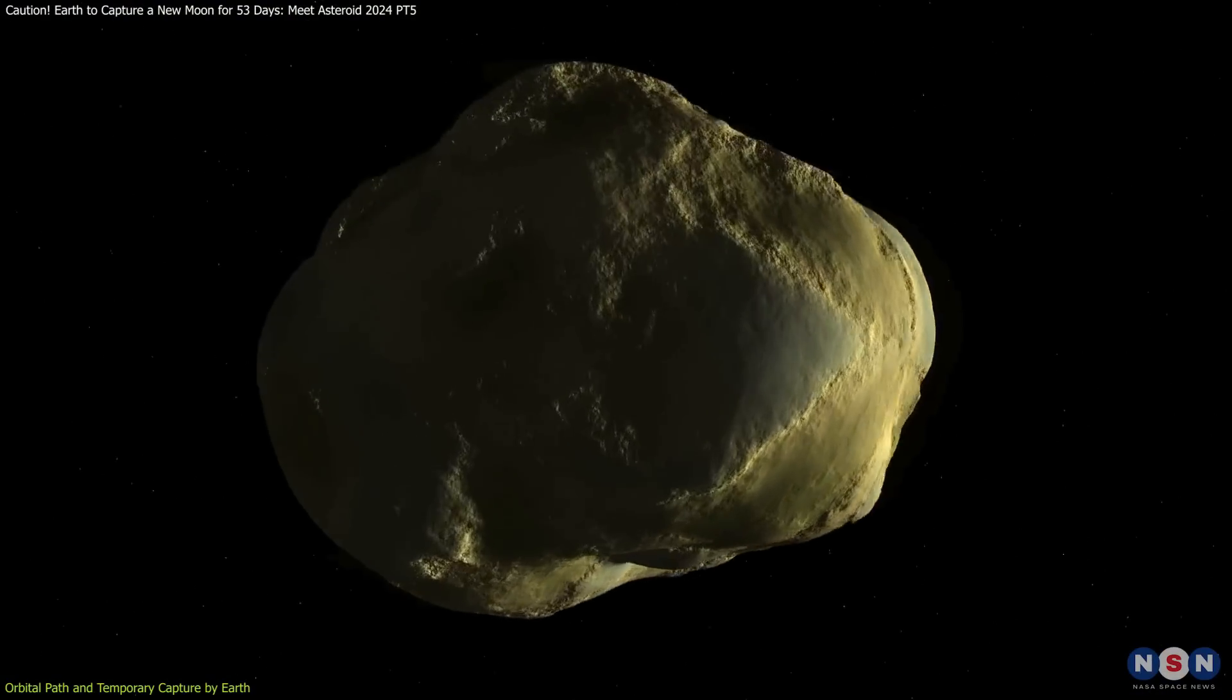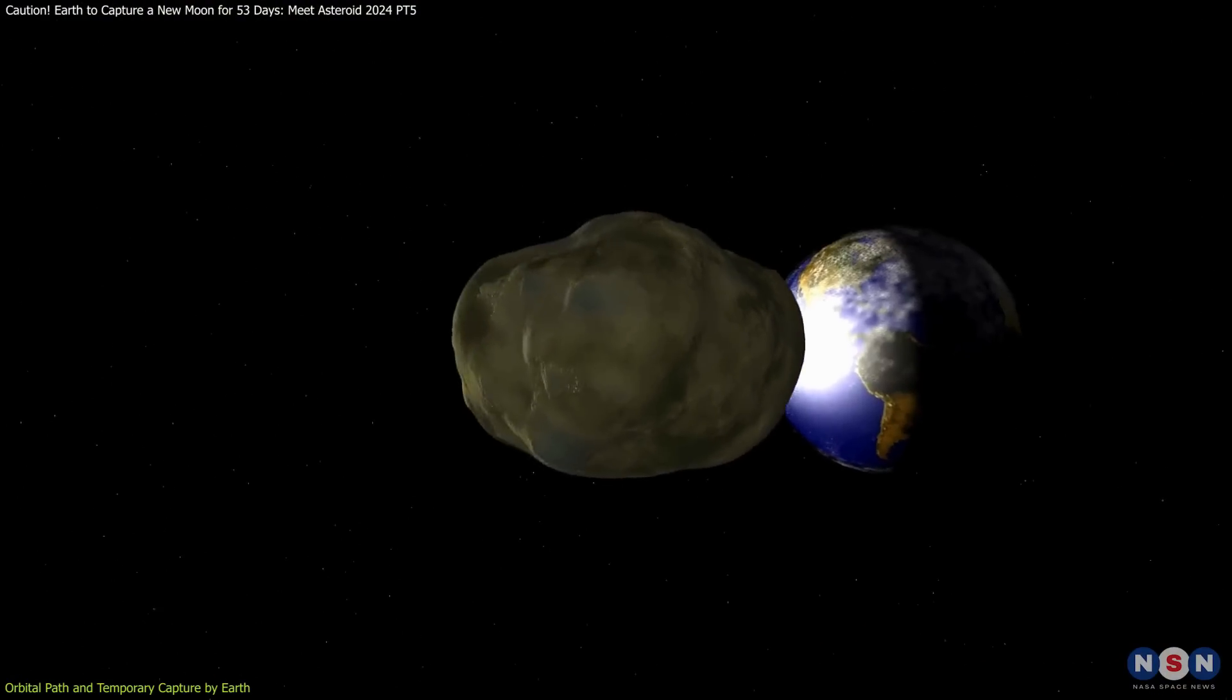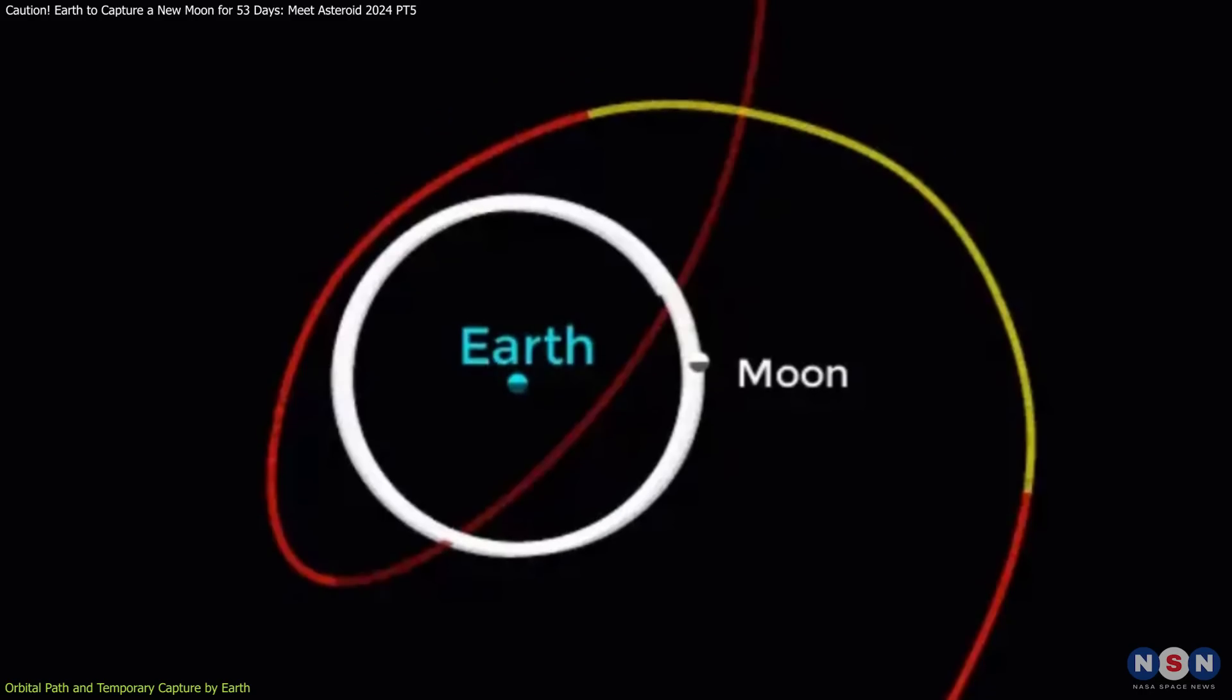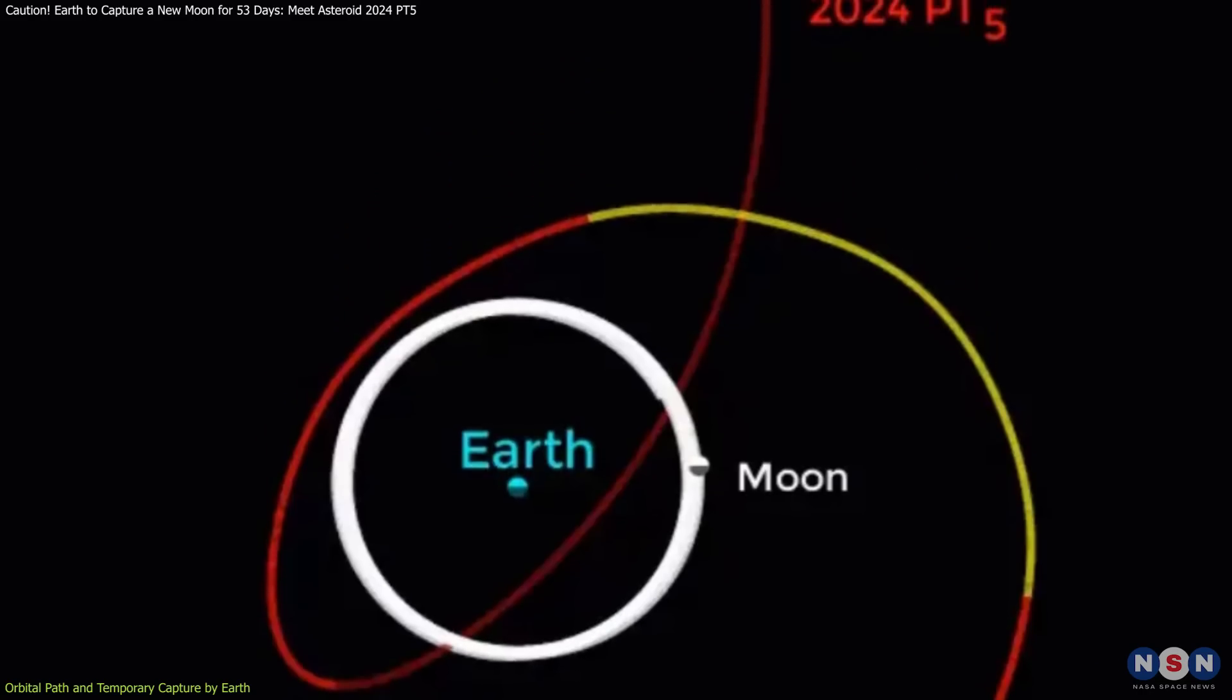For this mini-moon, the conditions are just right for it to be captured by Earth's gravity for a short period, making one complete orbit around the planet over 53 days.